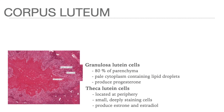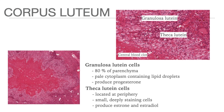A higher magnification of the corpus luteum shows two kinds of lutein cells. Those arising from the granulosa cells are called granulosa lutein cells, while the smaller, more deeply staining cells arising from the cells of the theca interna are the theca lutein cells. Both types have an abundance of smooth endoplasmic reticulum and lipid droplets in the cytoplasm, characteristic of steroid-secreting cells. The principal steroid secreted by the granulosa lutein cells is progesterone, while theca lutein cells secrete estradiol and estrone.